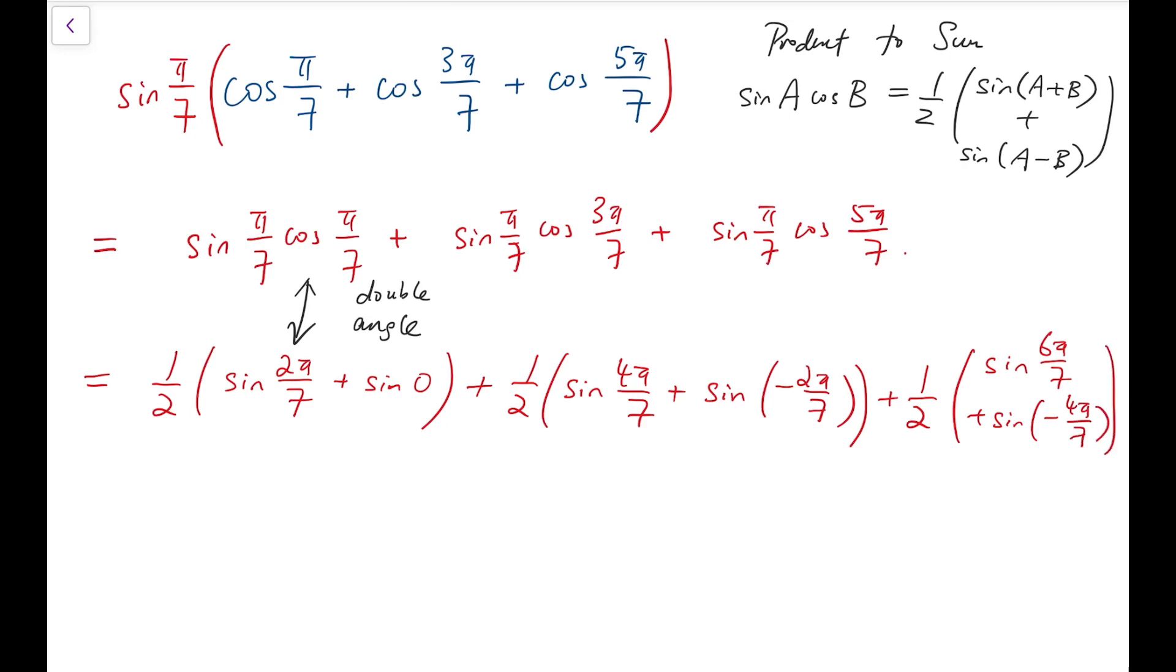So then, simplifying, we'll have half of sine of 2π over 7 plus sine of 4π over 7 minus sine of 2π over 7 plus sine of 6π over 7 and finally minus sine of 4π over 7. Notice that we're actually coming to a telescoping sum. The added terms are all cancelled out by subtracting sums afterwards.